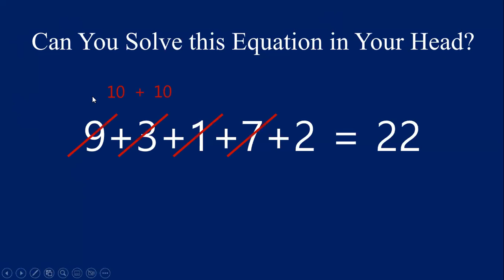So then all I had to do was add 10 plus 10 in my head, which gives me 20, and then I added this 2. 20 plus 2 is 22. It's that easy.